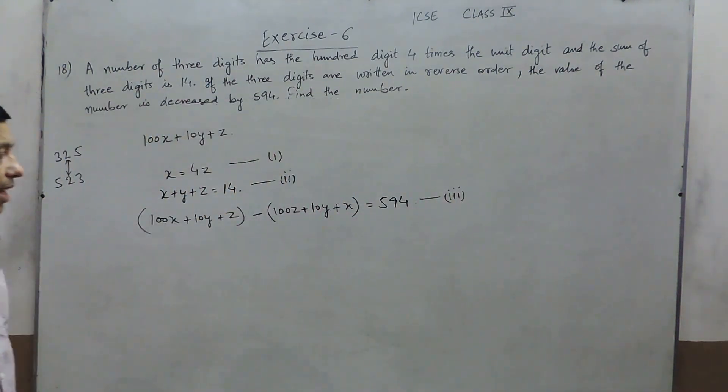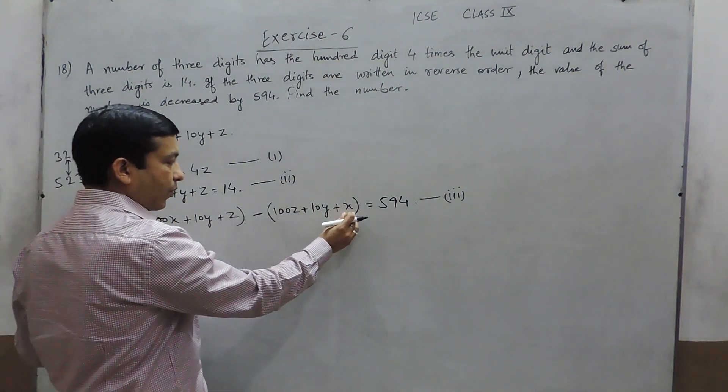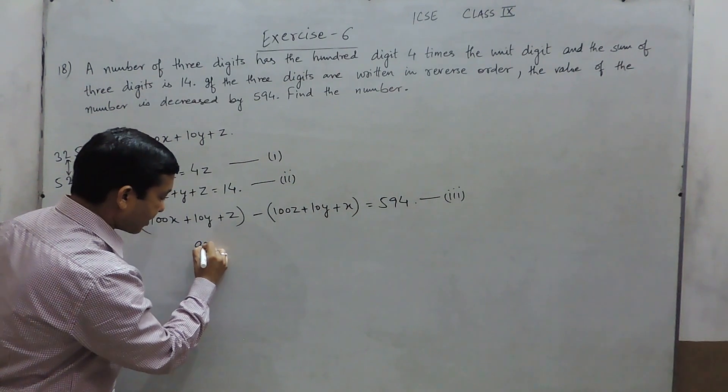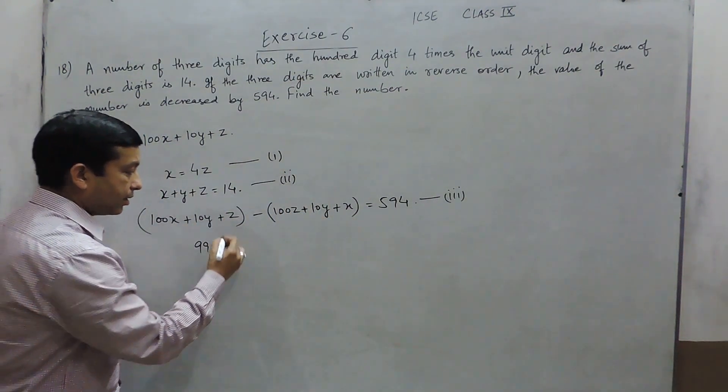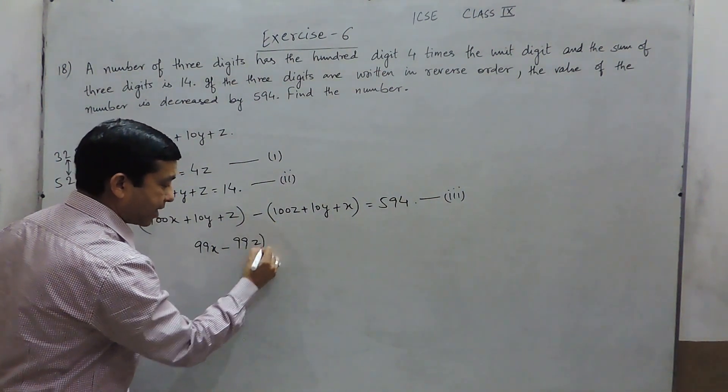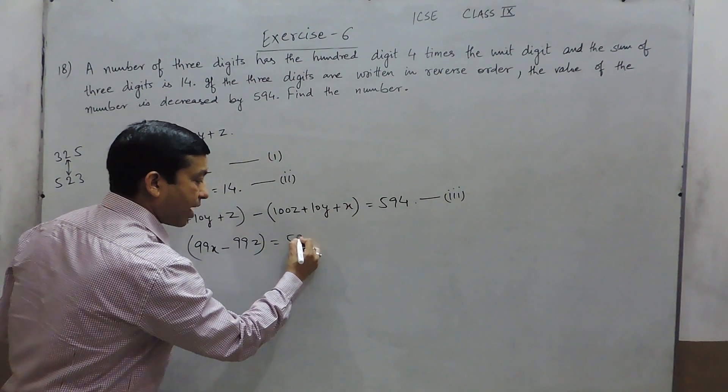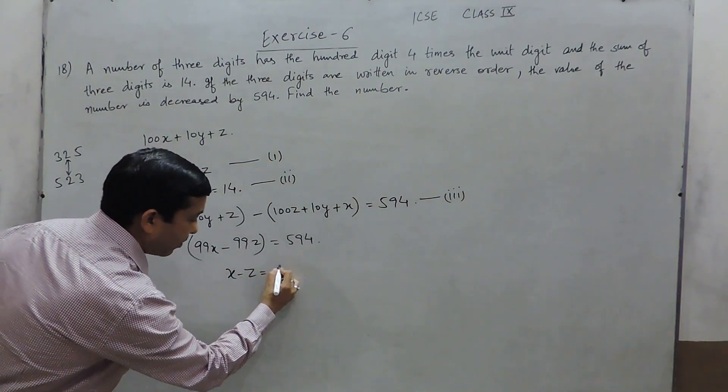If I am closely relating the third equation, this is 100x, this is 1x, so it is 99x. 10y will be cancelled by 10y and z with minus 100z becomes minus 99z and this equals 594. That means the value of x minus z becomes 6.